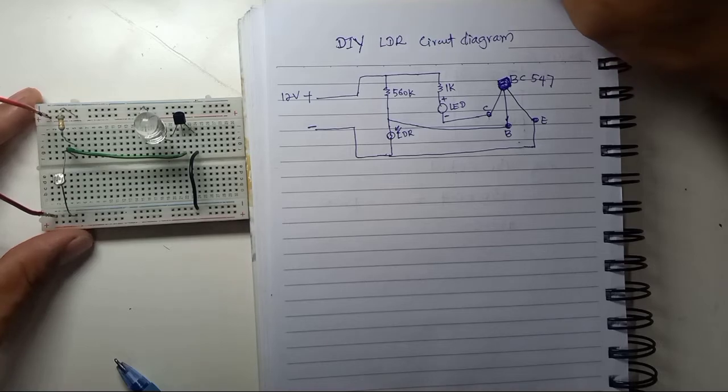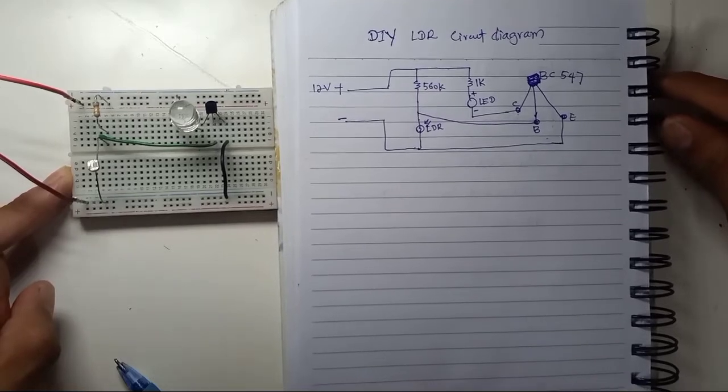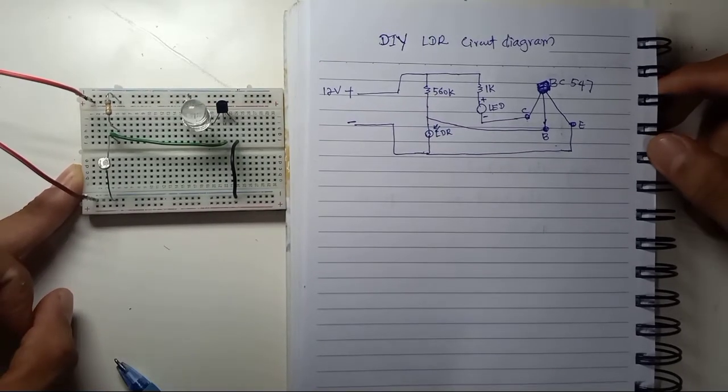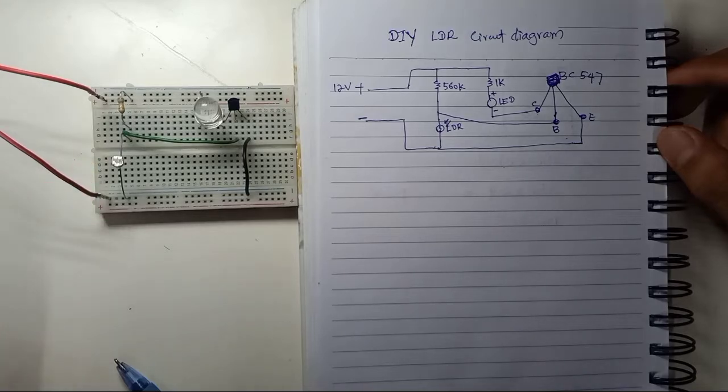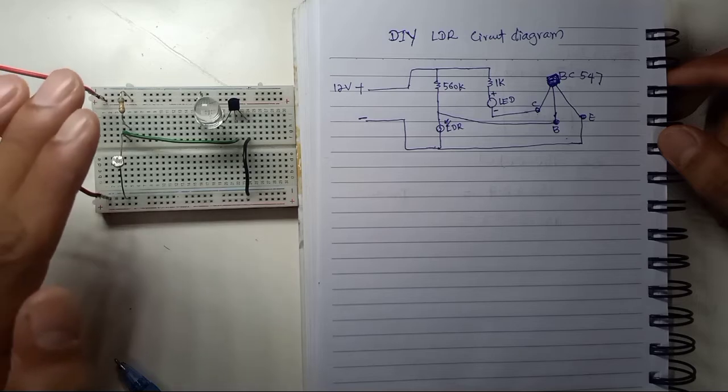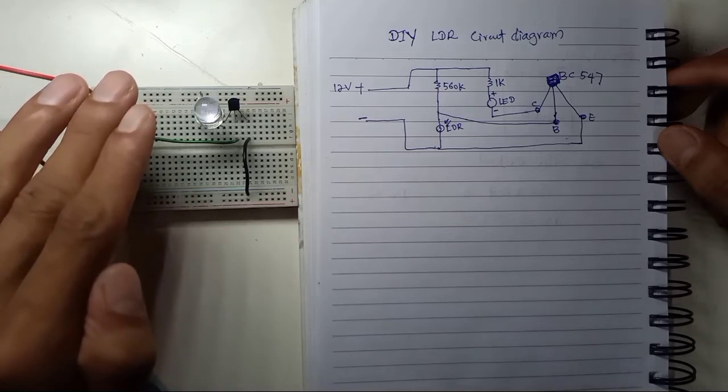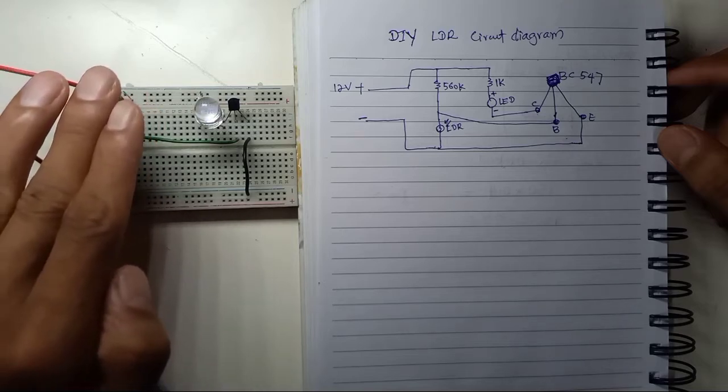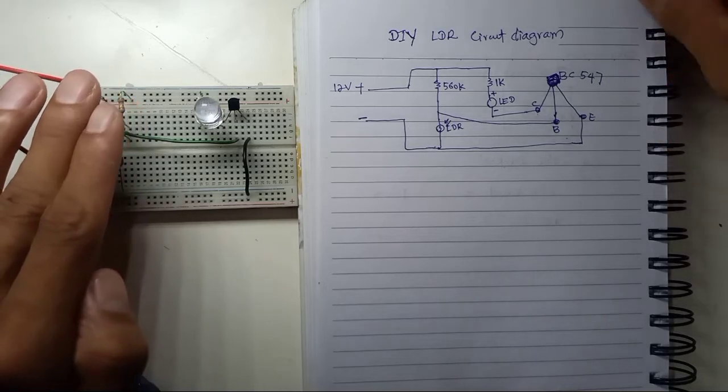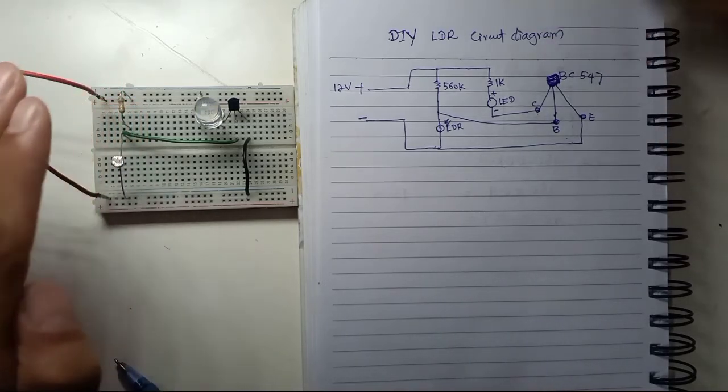Okay, I already turned on my power supply. Let me test. Okay, if I use my hand to shadow LDR, you will notice that, you will see the LED is bright. LED light is turning on.